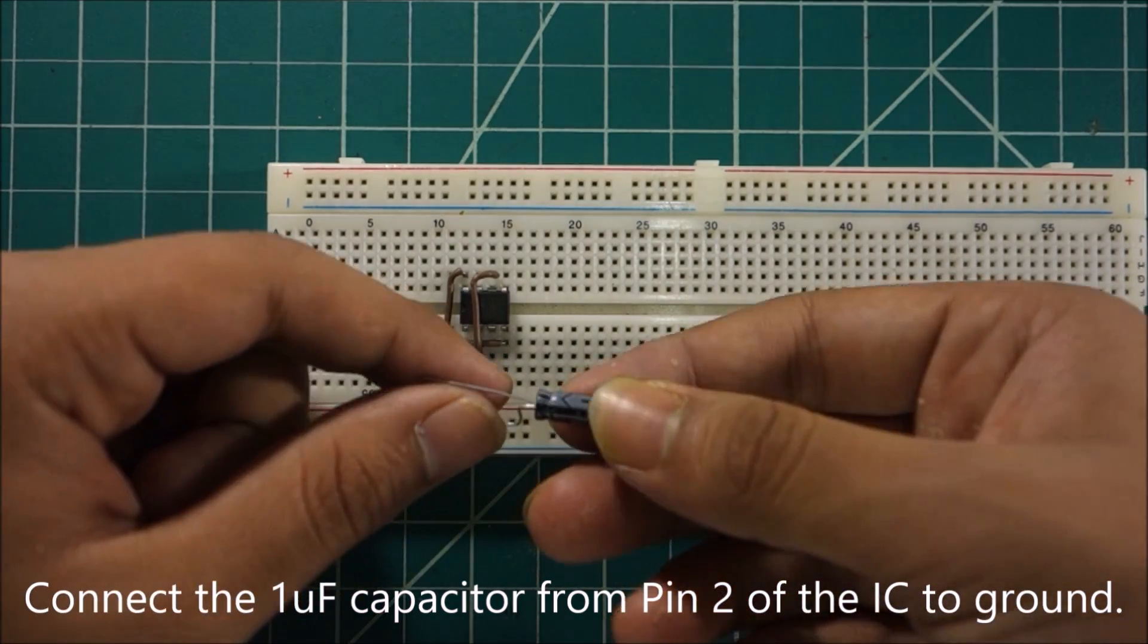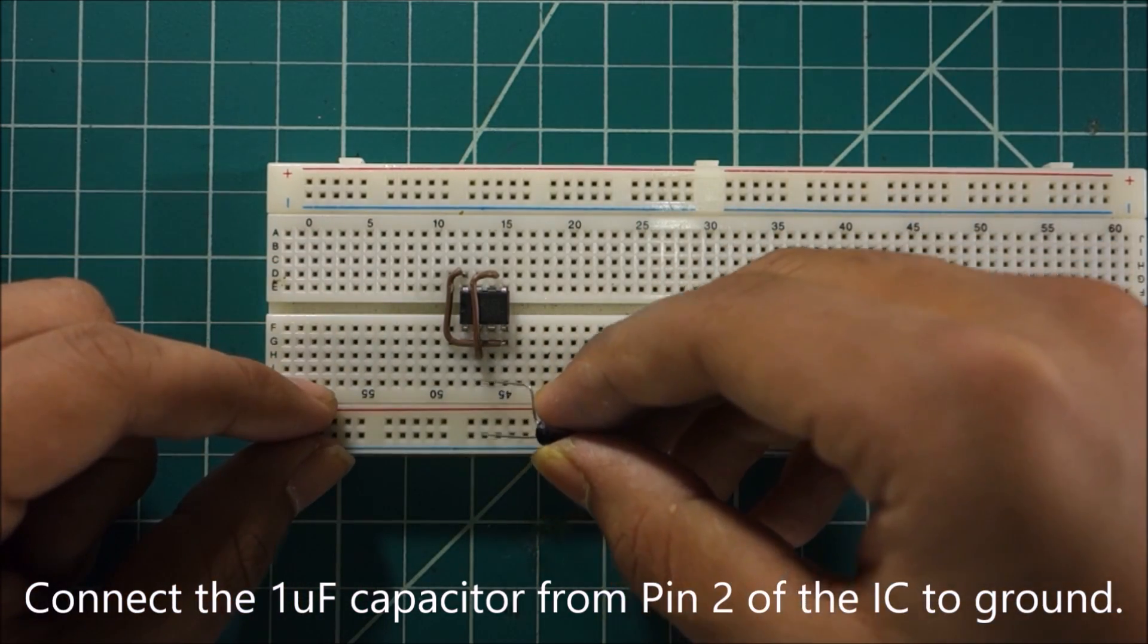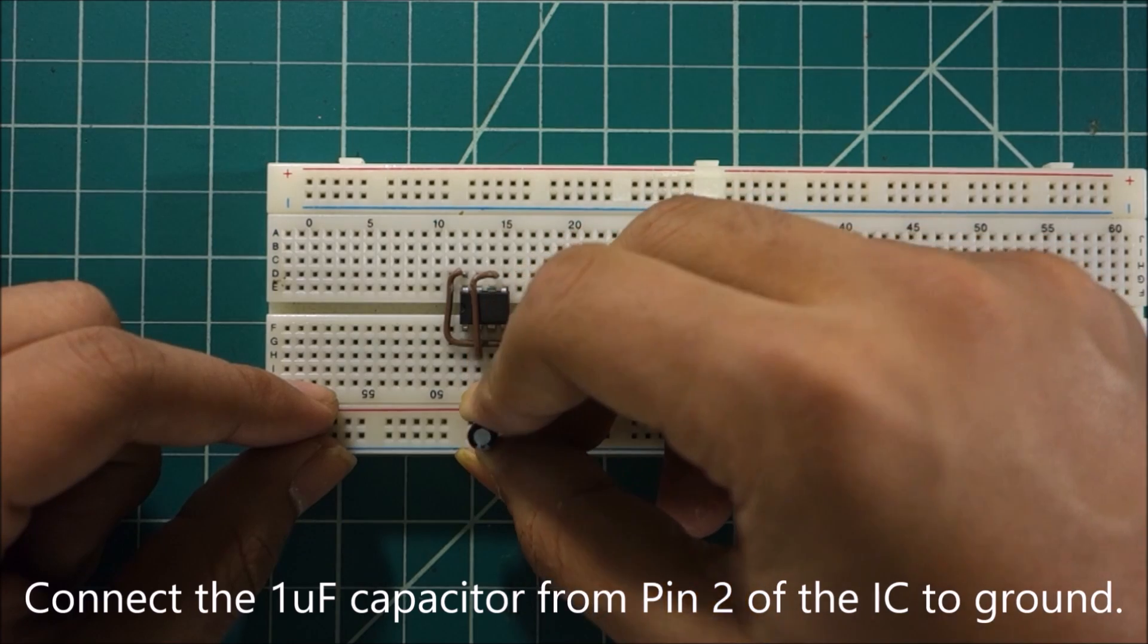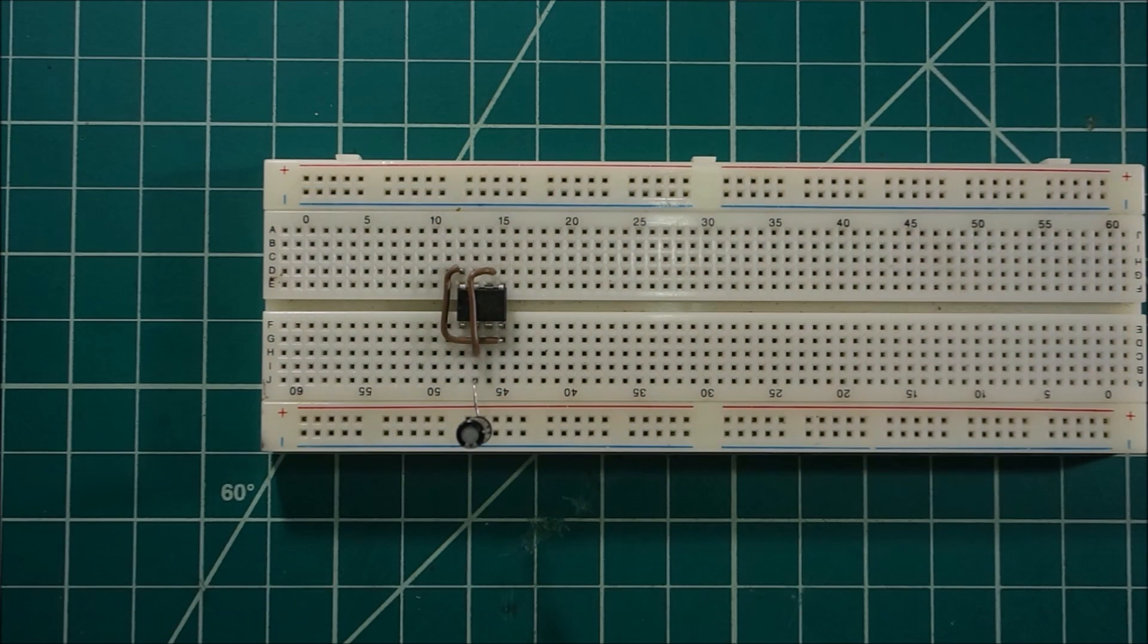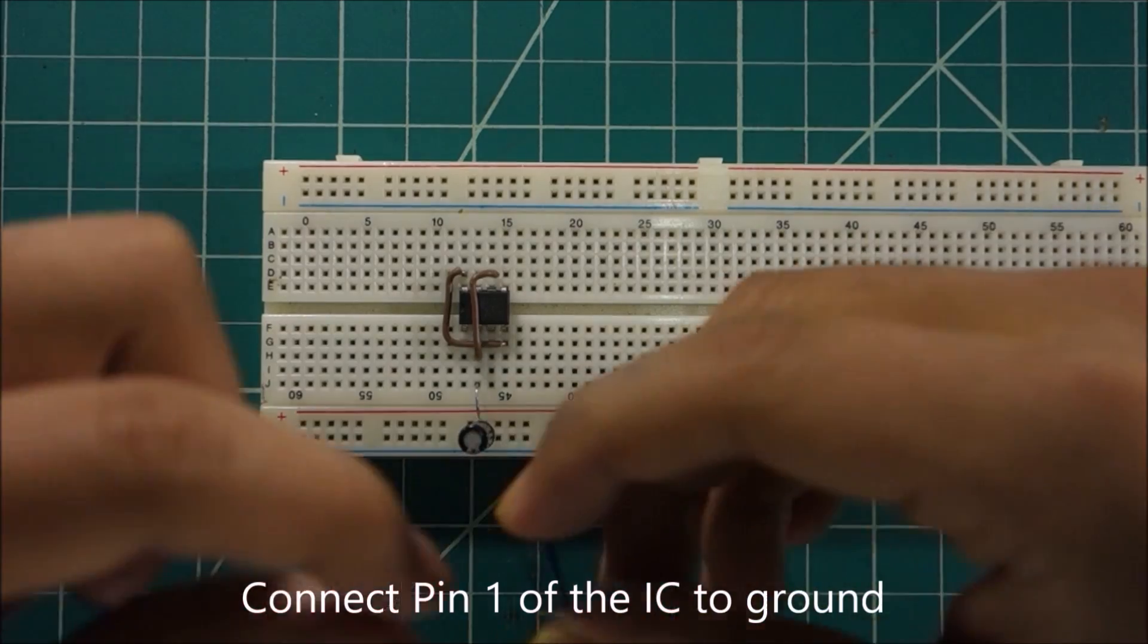Connect the one UF capacitor from pin 2 of the IC to the ground. Connect pin 1 of the IC to ground.